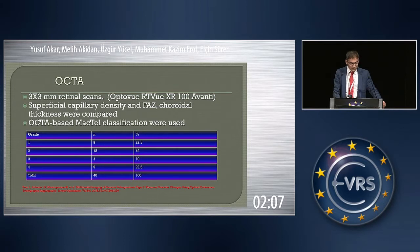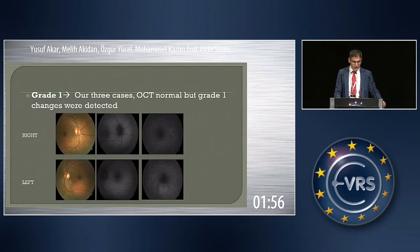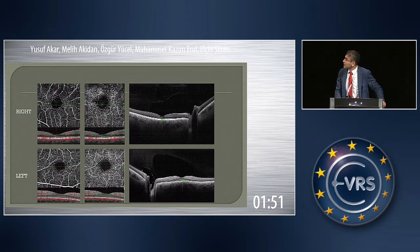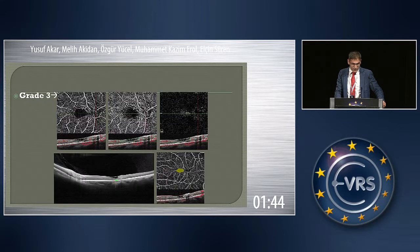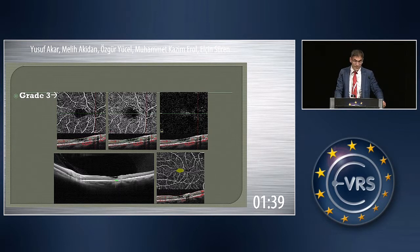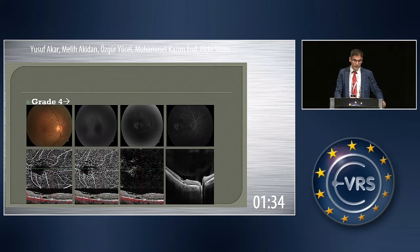We measured superficial capillary density, foveal avascular zone, and choroidal thickness. OCT-based macular telangiectasia classification was used as shown in the figure: grade 1 is temporal microtelangiectasia, grade 2 is both temporal and nasal telangiectasia with 360-degree perifoveal telangiectasia, grade 3 is associated with intraretinal vascularization, and grade 4.